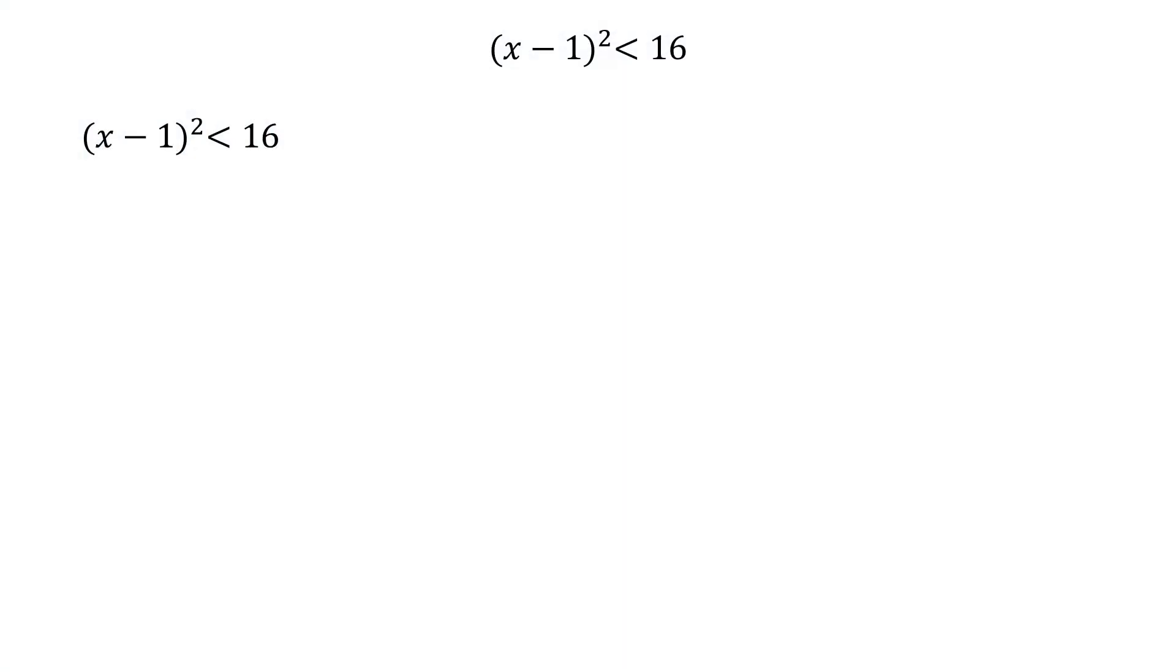Since all the values in this inequality are non-negative, we can take the principal square root. Doing so we get, √(x - 1)² < 4.